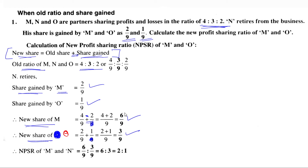We need to simplify the ratio. We can't express it as 6/9 and 3/9 — we need to minimize it. So the ratio is 6:3, and dividing both by 3 gives us 2:1. The new profit sharing ratio of the remaining partners M and O is 2:1. If you found this helpful, share it with your friends — see you in the next video!